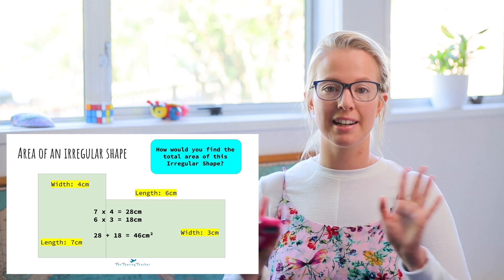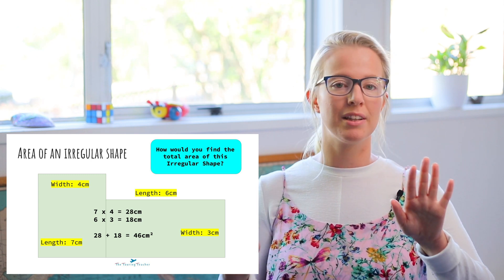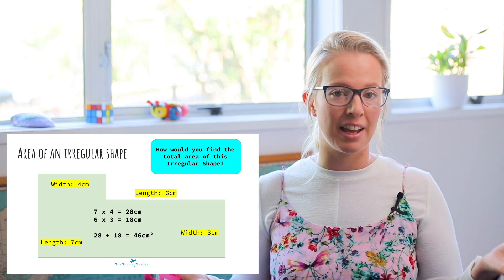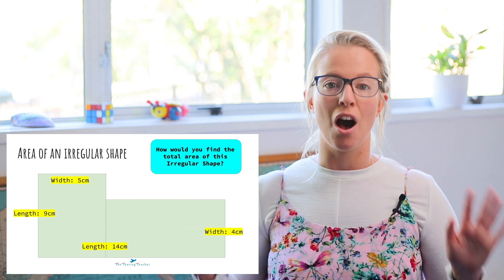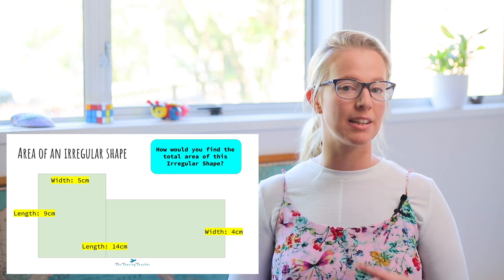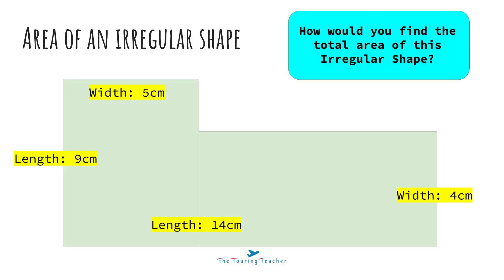So I divided it up into two different rectangles, I was able to do length times width for both rectangles, then to find the total area I added them together. Let's try another one. You can pause the video here to see if you can figure it out yourself, or you can follow along with me. This one is a little bit different — let's see if you can figure out what the difference is between this one and the previous one.